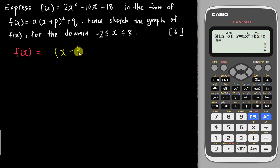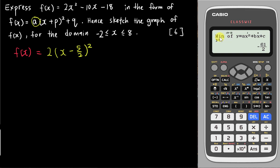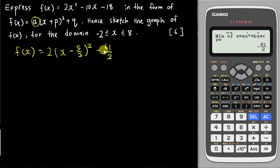You also have an 'a' value here, which is simply the coefficient of x², which is 2. Copy the 2 and press equal again. For the minimum y value, you can just copy it directly without changing any sign — it's negative 61/2. So the completed f(x) equation can be obtained in less than one minute using the Casio calculator.